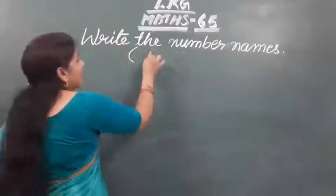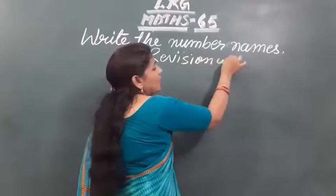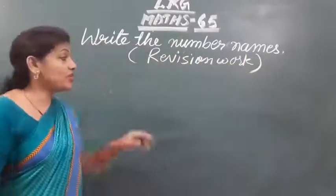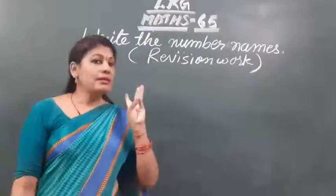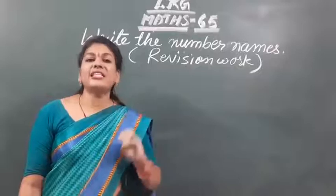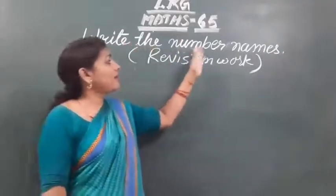I am writing here in bracket that is revision work. In revision work what are you doing? Almost three questions over numbers, counting that means forward and backward counting and missing numbers. It is the fourth question. Write the number names.